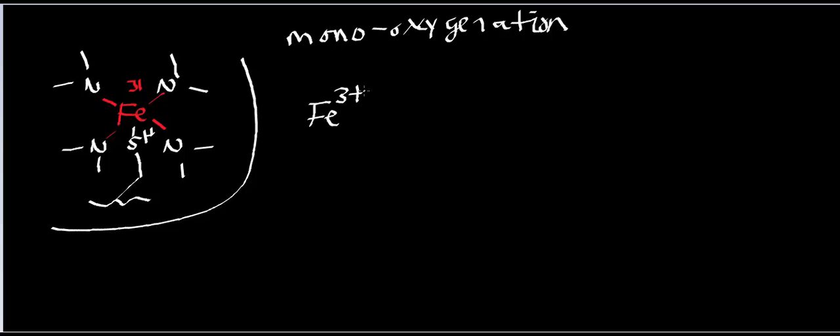We're going to start with iron 3+. Initially, the first step is that we're going to have some R group — typically the oxygenations that occur are on fairly large hydrophobic carbon chains. The R just designates the carbon chain. The first step is the enzyme is going to bind the carbon chain. In the case of a steroid, an example would be something like 11-deoxycortisol, which is going to get monooxygenated to cortisol. Or 11-deoxycorticosterone is going to get oxygenated to corticosterone, and then further oxygenated to aldosterone. So the first thing that happens is the enzyme binds the carbon chain — nothing happens yet with the iron.